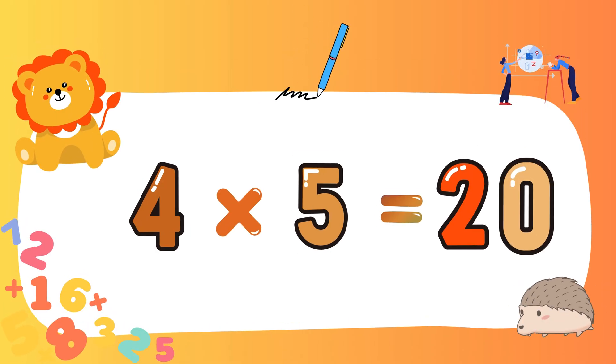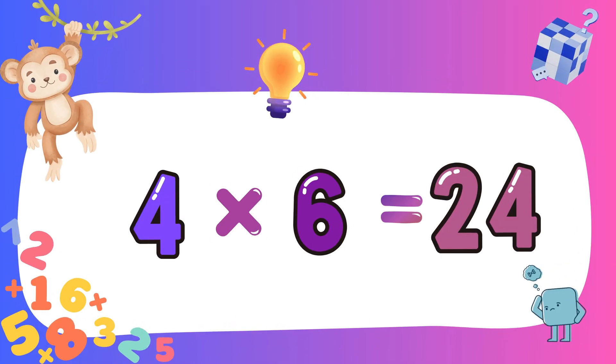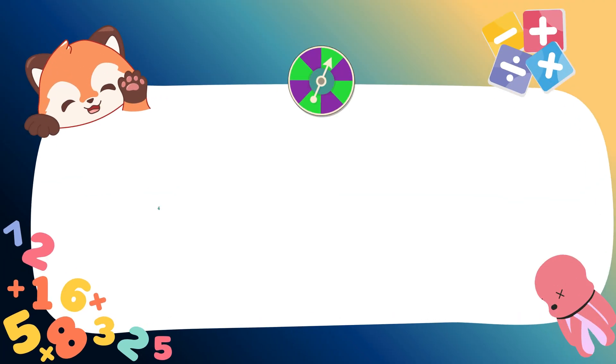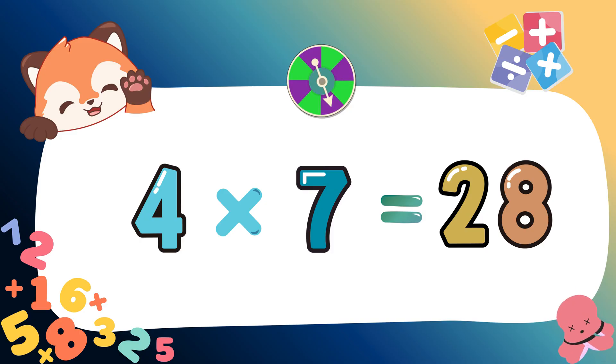Four fives are twenty. Four fives are twenty. Four sixes are twenty-four. Four sixes are twenty-four. Four sevens are twenty-eight. Four sevens are twenty-eight.